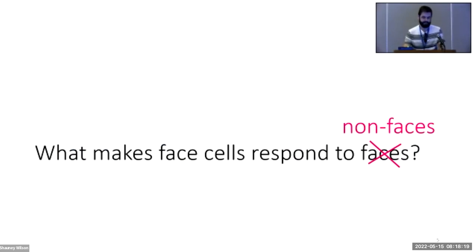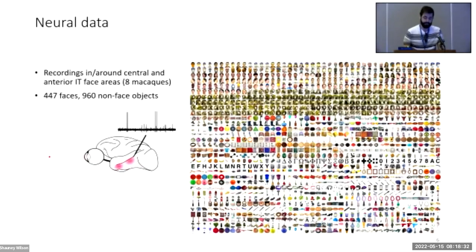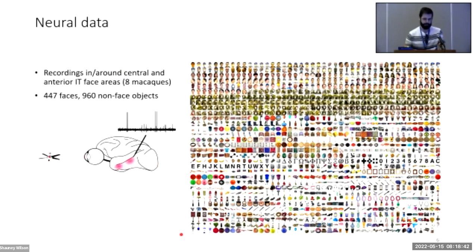To investigate this, we focused on non-face responses and turned the question 'what makes a face cell respond to faces?' into 'what makes a face cell respond to non-faces?' I analyzed recordings from macaque face areas in response to hundreds of face and non-face stimuli — about two-thirds were non-faces, that's 960, and then around 400 faces. This is an important departure from previous studies which focused mainly on faces to characterize face cells.